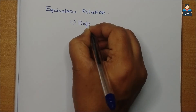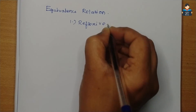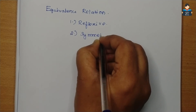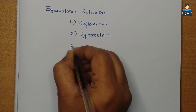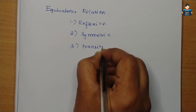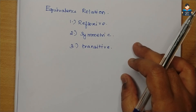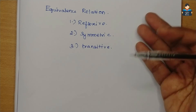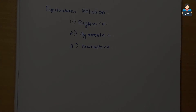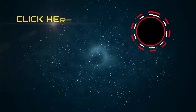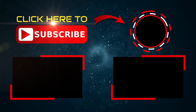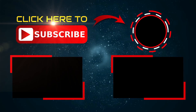The three types of relation are: Reflexive, Symmetric, and Transitive. The equivalence relation will be covered in detail in the next video. Please like, share, and subscribe. Thank you.